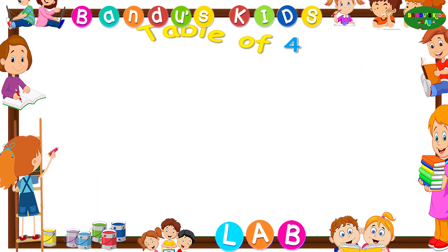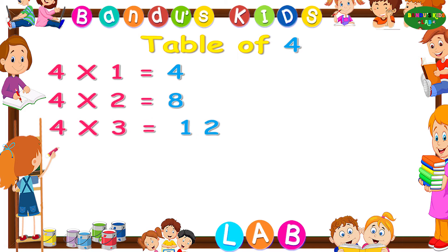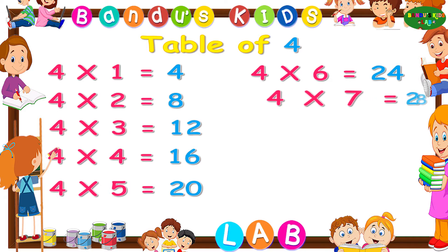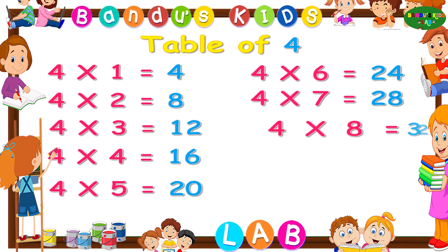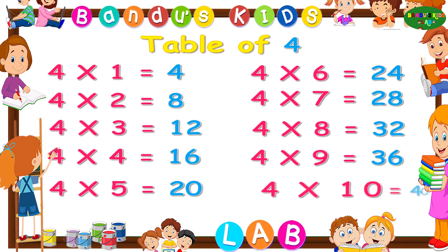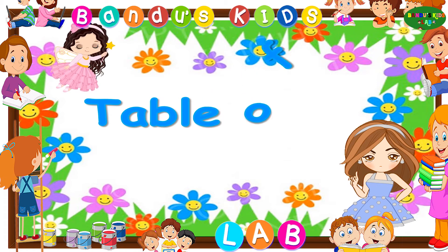one more time by singing. Four ones are four, four twos are eight, four threes are twelve, four fours are sixteen, four fives are twenty, four sixes are twenty-four, four sevens are twenty-eight, four eights are thirty-two, four nines are thirty-six, four tens are forty.